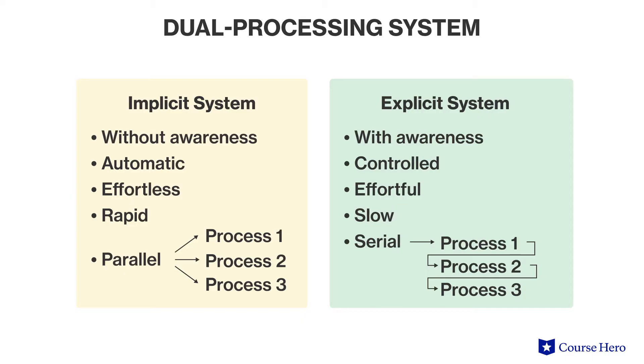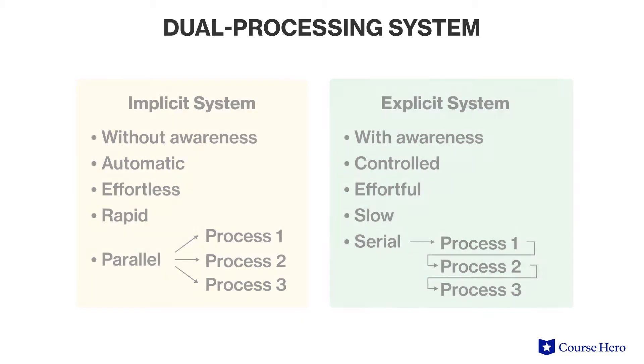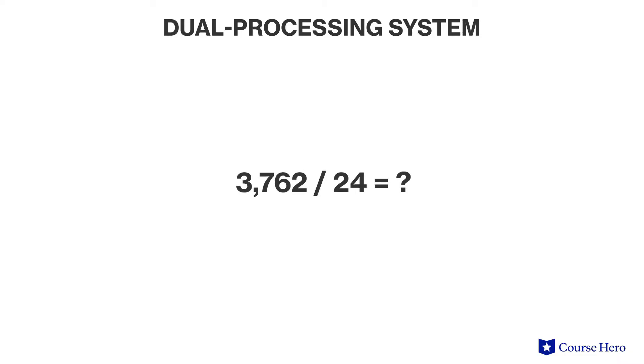The explicit system involves conscious awareness and deliberate cognitive effort and explicit processing. For example, if I asked you to solve this long division problem.